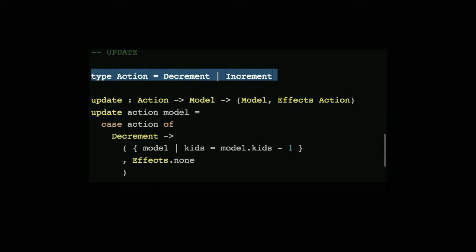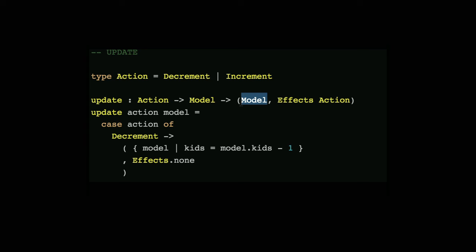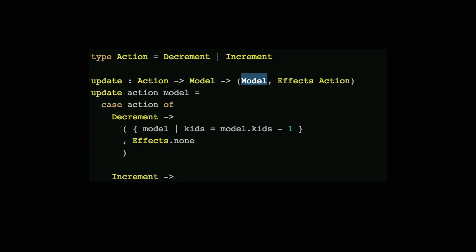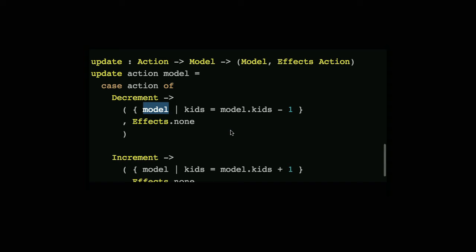Below that we have the update function, which is kind of the controller we know from MVC. Looking at the type signature: I'm going to get an action, I'm going to get a model, and then I'm going to return another model. Elm is an immutable language — I got a model, I cannot reassign values to it; I'm actually creating a new model and handing it back. The update function gets an action and a model, and I have a case over here — case action of Decrement and Increment. I cannot write anything else, I cannot have a typo. The compiler will not allow a typo and will not allow me to forget to write Increment. It guarantees all cases are fulfilled. Inside the case, I'm saying: take the model and take the kids property and just decrement or increment it by one.